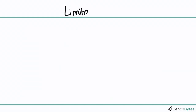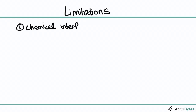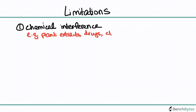I also want to touch on the limitations of this assay. While it's a wonderful assay, it does have some pretty significant limitations. One of these is that it can be affected by any sort of chemical interference that affects metabolism. You need to be careful about what kinds of drugs or compounds you're screening — for example, some plant derivatives, vitamin A, and certain toxins all inhibit metabolism and will affect what your MTT assay reads out.